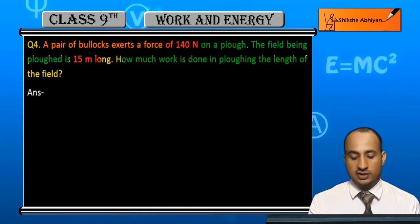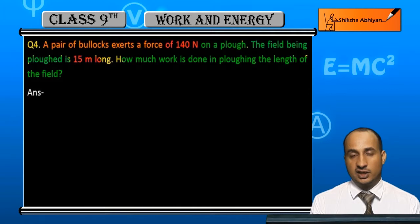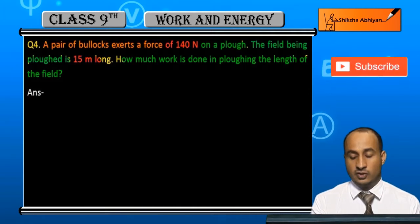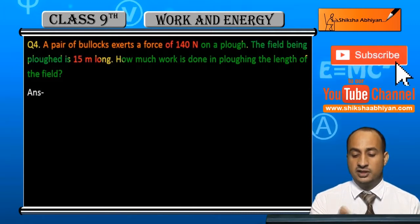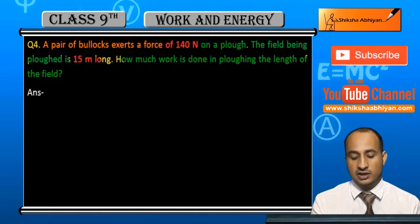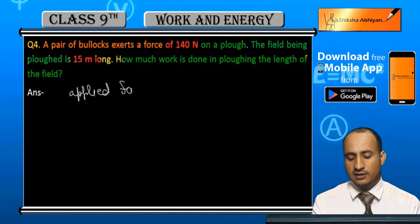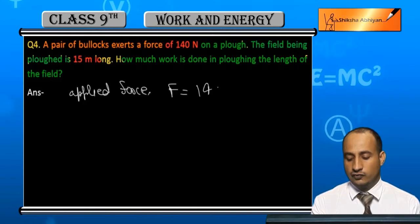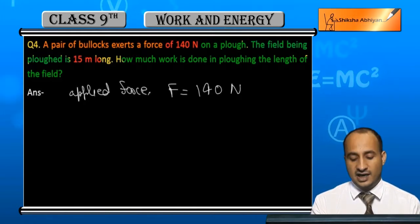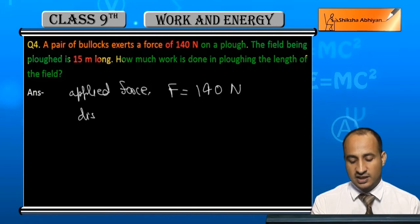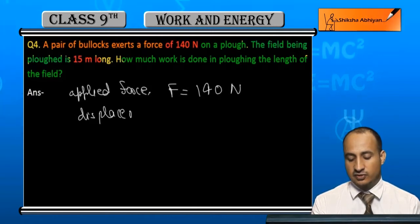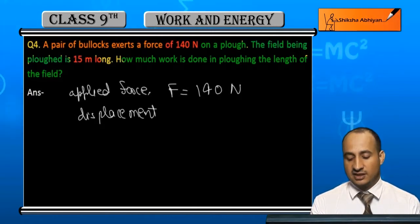How much work is done in ploughing the length of the field? Simple. The given applied force F equals 140 Newton. The displacement in the direction of force, s, equals 15 meters. So what is the work done?